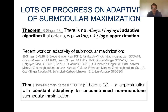One result most closely related to this work is that for the problem of unconstrained non-monotone submodular maximization, it is actually possible to obtain an approximation arbitrarily close to one-half with constant adaptivity. And we know that for this problem, one-half is the optimal approximation achievable.